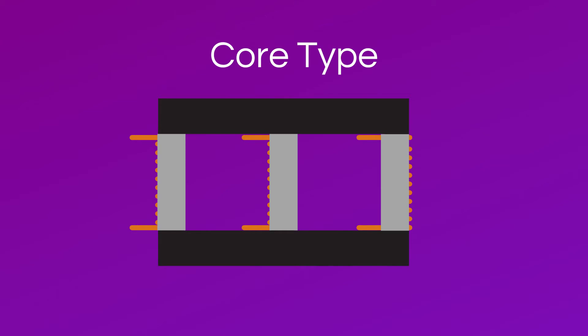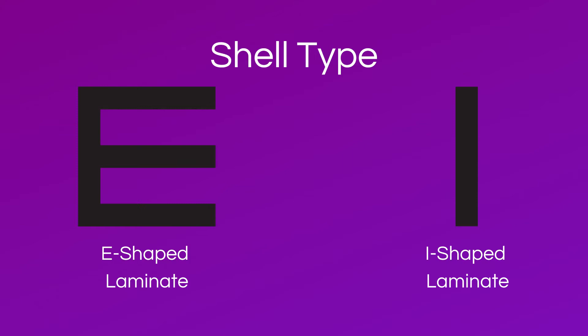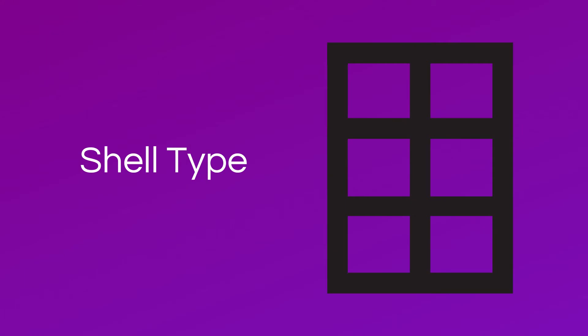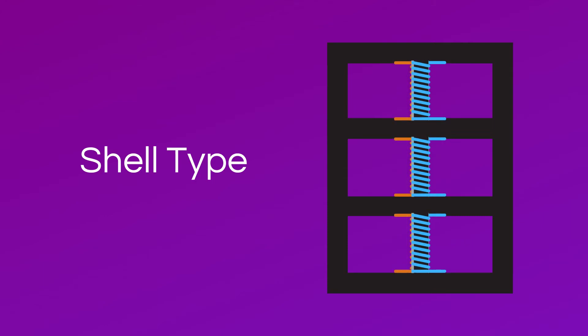Now onto shell type transformer cores. The single phase shell type is constructed in the exact same way as a three phase core type transformer, as it also uses E and I laminates. However, the primary coil is only wound around the center limb. Then, like the three phase core type transformer, an insulator is wrapped around the primary coil and the secondary coil is wound around the insulator. A three phase shell type transformer core is a rectangle with six empty squares inside, creating three limbs that the primary and secondary coils wrap around. The windings operate similarly: the primary coil wraps around the limb, then an insulator wraps around the coil, and then the other coil wraps around the insulation.